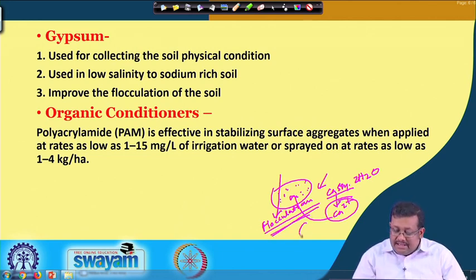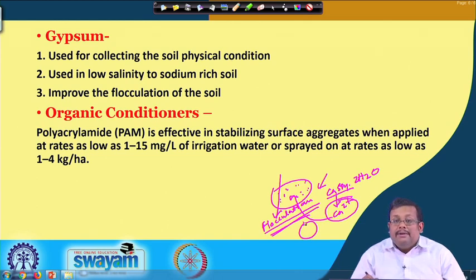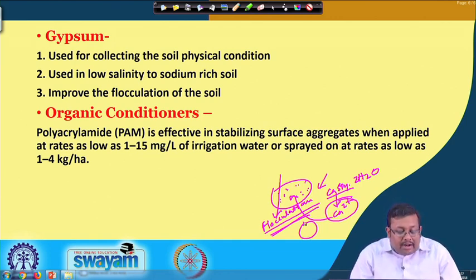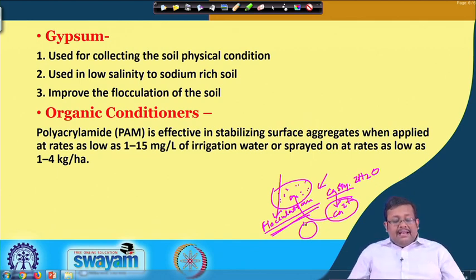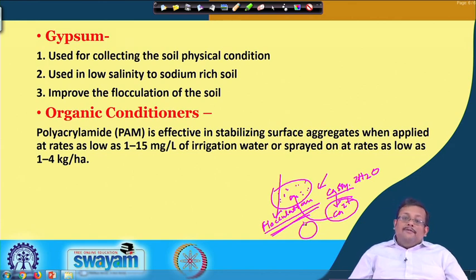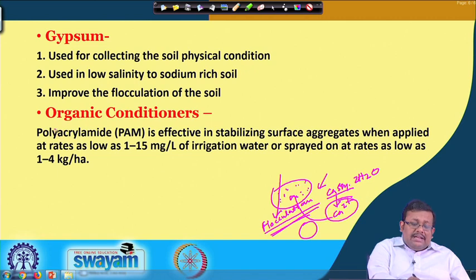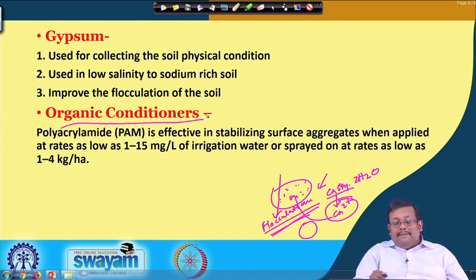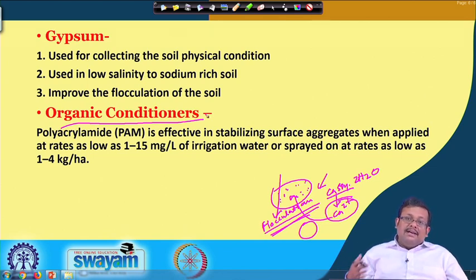Flocculation occurs due to aggregate formation, and the calcium from gypsum basically helps in flocculation. When there is flocculation, structures are stabilized and favourable porosity is maintained for proper movement of air and water for crop growth. Another type of organic conditioner is polyacrylamide or PAM, which is effective in stabilizing surface aggregates when applied at rates as low as 1 to 15 milligrams per litre of irrigation water, or at rates as low as 1 to 4 kg per hectare. These organic conditioners help produce better stabilized soil structure, ensuring better air movement and water movement.